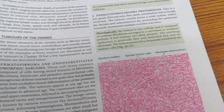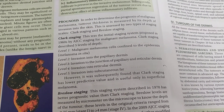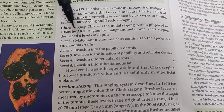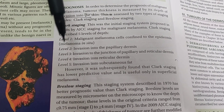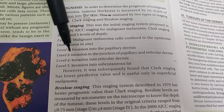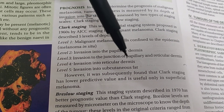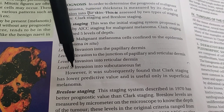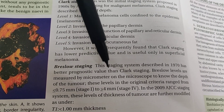For staging, the tumor thickness is measured by depth of skin invasion to determine prognosis. There are two scales: Clark staging and Breslow staging. Clark staging has five levels: Level I is melanoma confined to the epidermis; Level II invades the papillary dermis; Level III reaches the junction of papillary and reticular dermis; Level IV invades the reticular dermis; Level V invades the subcutaneous fat.